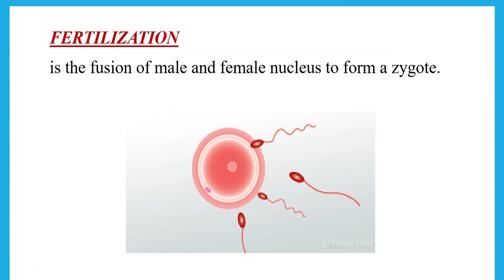After ovulation, the egg enters the oviduct where fertilization can occur. Fertilization is the fusion of the male and female nuclei to form a zygote. The egg is surrounded by a jelly coat, and the sperm uses its acrosome to release enzymes that help it penetrate the jelly coat. Once one sperm has penetrated, the jelly coat closes so no more sperms can enter, and the nucleus of the sperm fuses with the nucleus of the egg to form a zygote.